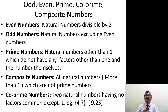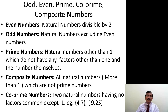We can also classify numbers as even numbers, which are divisible by 2, and odd numbers, which are all natural numbers that are not even. Then we have prime numbers: natural numbers other than one which do not have any factors other than 1 and the number itself.